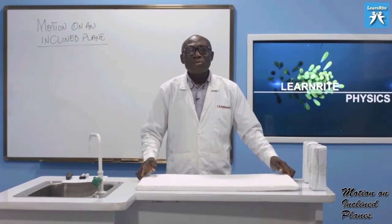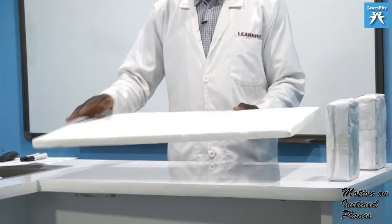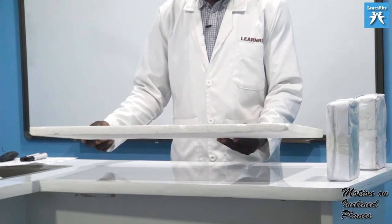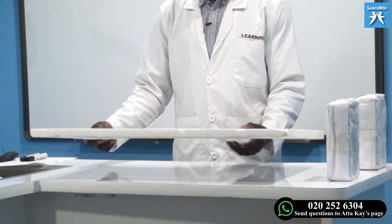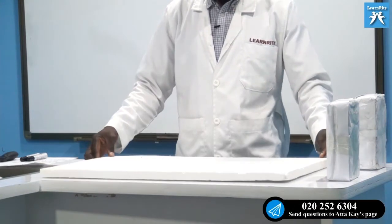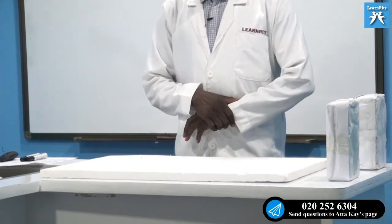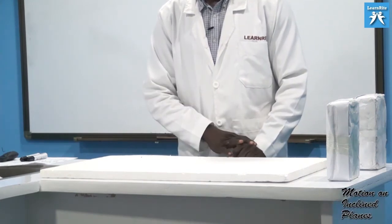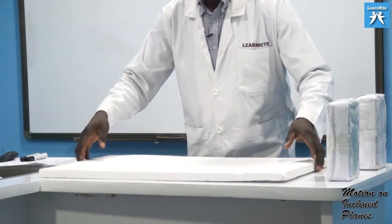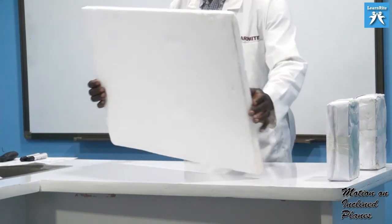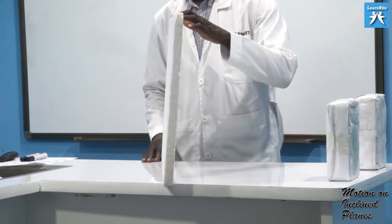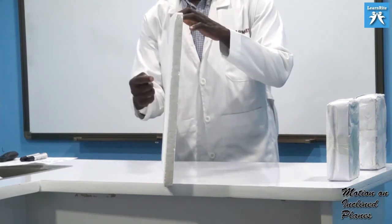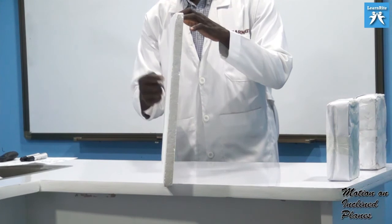Have a look at this flat surface — this white flat surface. That is a plane. Now I am going to allow this one to lie horizontally, as you can see, and I am going to call this a horizontal plane. Now should I raise this plane and position it this way, the plane is now lying vertically, and I am going to call this a vertical plane.